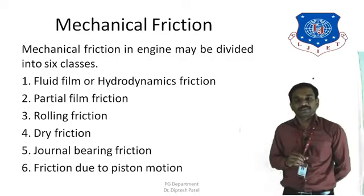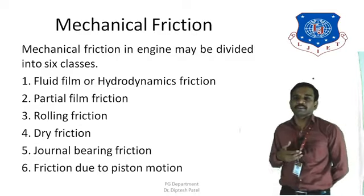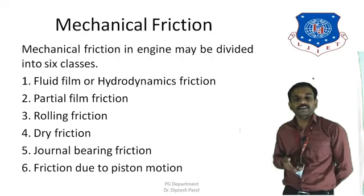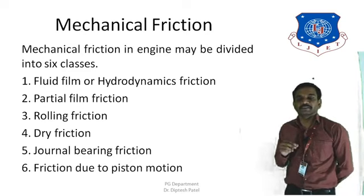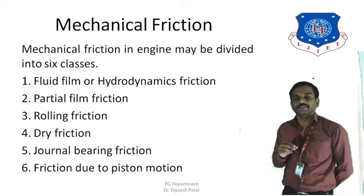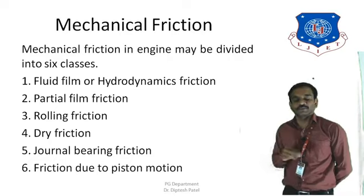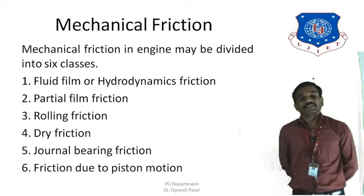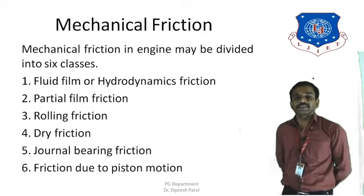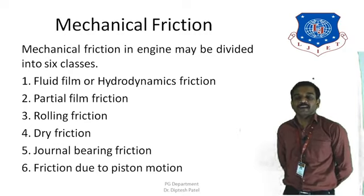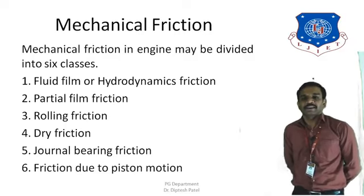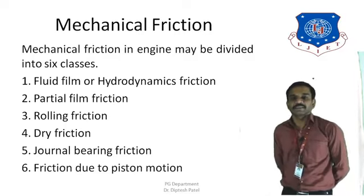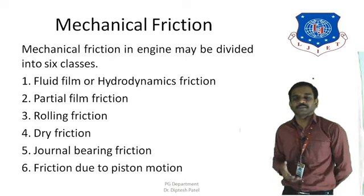The third type is rolling friction, which occurs in roller bearings where the roller rolling inside the bearing creates a certain amount of pressure as it moves. The fourth is dry friction, which occurs when two components remain in direct contact and the engine runs completely dry — typically when a vehicle has been left undriven for a long period.